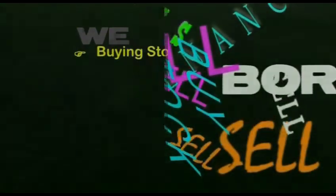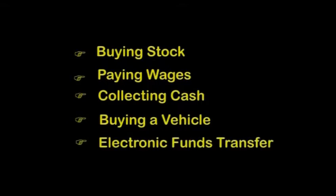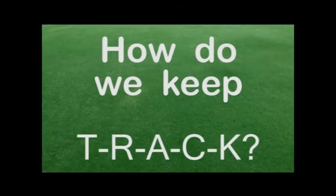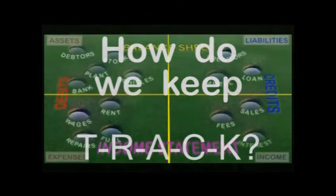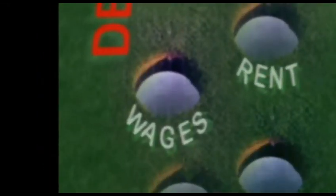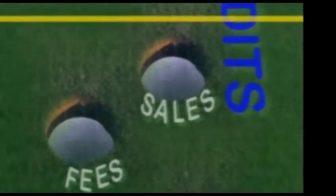Whether we are buying stock, paying wages, collecting cash from a debtor, buying a new vehicle, or making an EFT payment — these are all examples of transactions, and they need to be recorded in the accounting system. The wages pocket will accumulate all amounts spent on wages, and the sales pocket will accumulate all sales that the business has made.